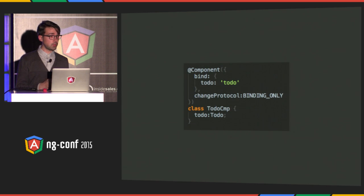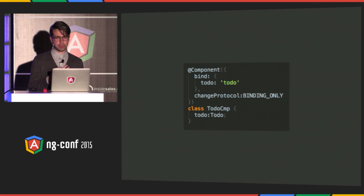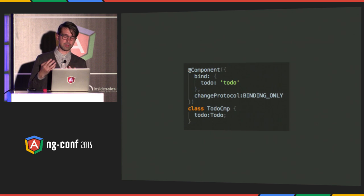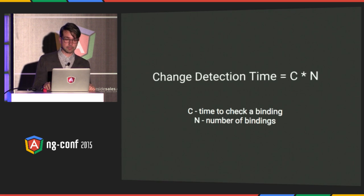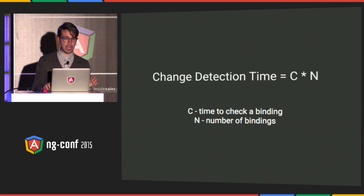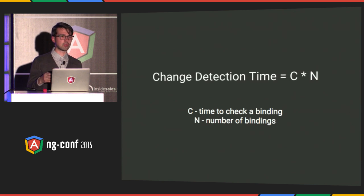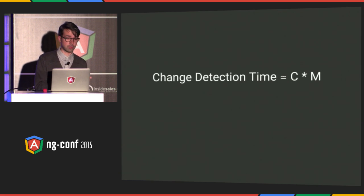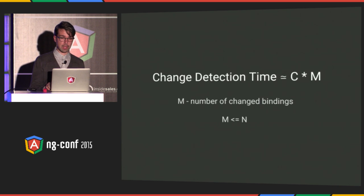Since only a small fraction of your screen tends to change at once, this can result in huge performance benefits. You won't have to check every single component in your graph, which can be thousands of components. If you use immutable objects, you will only check the path that changed. You can do this declaratively when you define a component — you say that it depends only on immutable objects. We're still finalizing the API, but the capability is already there. This changes the formula from N×C to m×C, where m is the number of changed bindings, and m will almost always be much smaller than N.